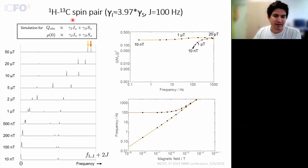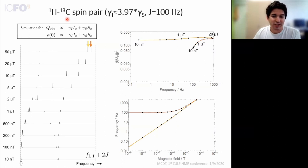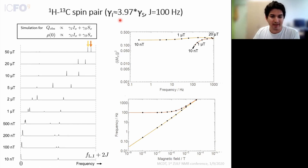For two different spin species coupled together — two spins with different gyromagnetic ratios — we choose carbon-13 and hydrogen. The gyromagnetic ratios differ by about 25% rather than ppm, so the frequency difference is much larger at a given magnetic field compared to chemical shifts alone. As a result, the strong-to-weak coupling crossover happens at a much lower magnetic field — now only a few microtesla.